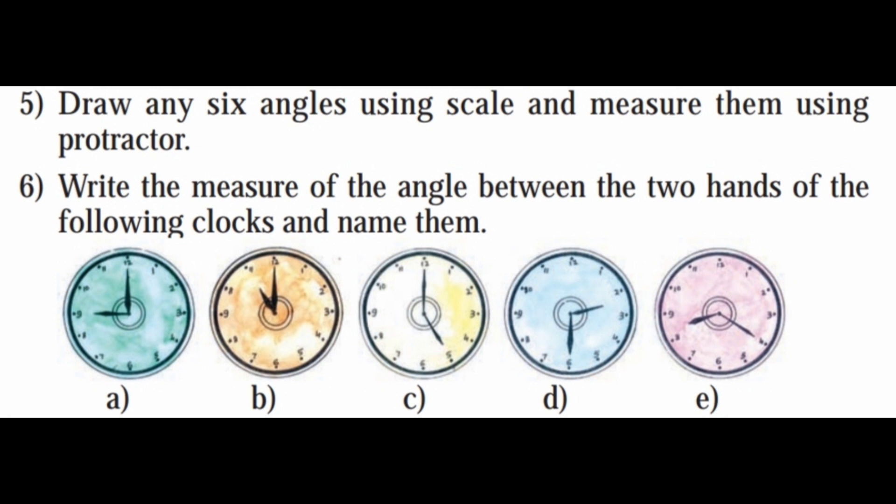Sixth question: write the measure of the angle between the two hands of the following clocks and name them. For each clock shown, measure the angle and identify whether it is acute, obtuse, or a right angle.